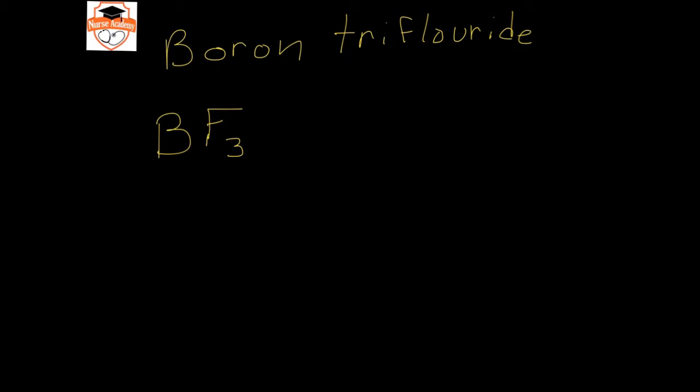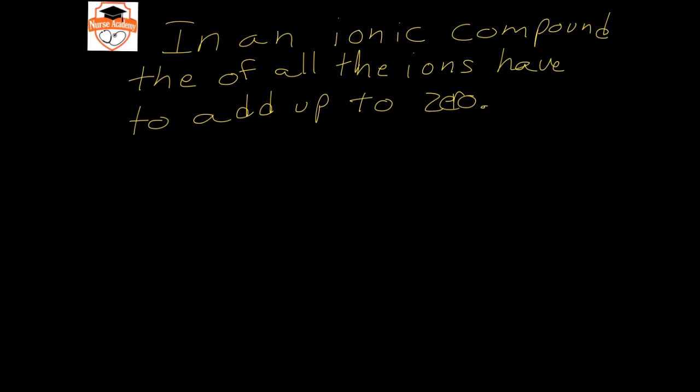A little more difficult is going to be compounds that are ionic, because then we have to use their charges to determine what the formula is going to be. The rule is, in an ionic compound, the charges of all the ions have to add up to zero. So let's say that we have magnesium fluoride. Magnesium, if we look at our periodic table, has a plus two charge.